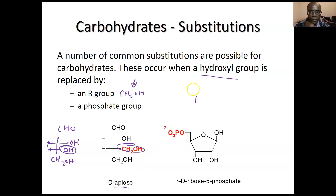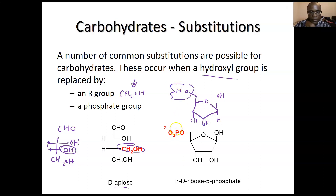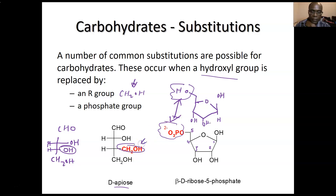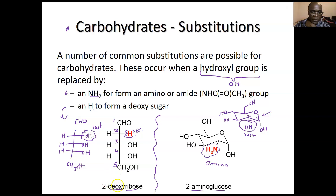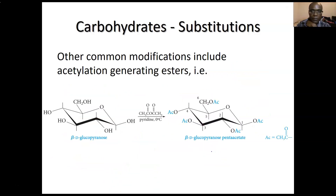If the OH is replaced by an R group such as CH₂OH, then the name changes — for example, D-arabinose. This can also be a beta-ribose form. You can replace the OH with a phosphate group, giving beta-D-ribose-5-phosphate, because this is the fifth carbon. It's possible to do OH substitution with a phosphate, an R group, a hydrogen for deoxygenation, or an amine.